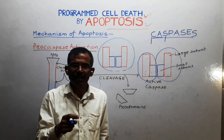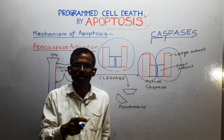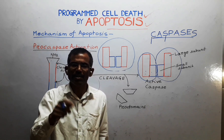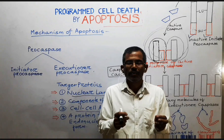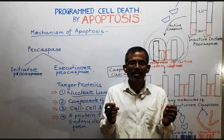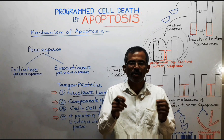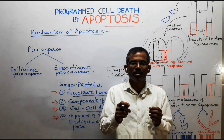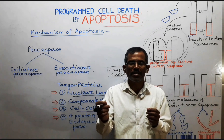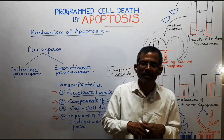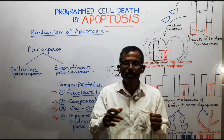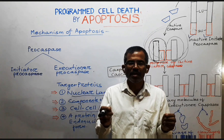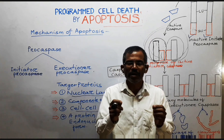Once activated, the caspase molecules cleave and activate other Procaspase molecules. From the earliest stages of animal development, healthy cells continuously make Procaspases and other proteins concerned with apoptosis, so the apoptotic machinery is always in place.